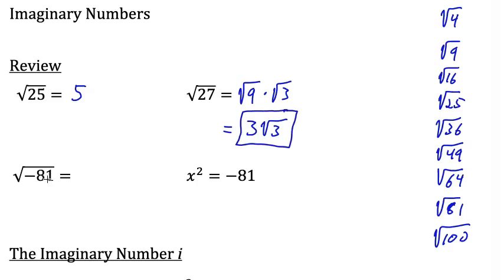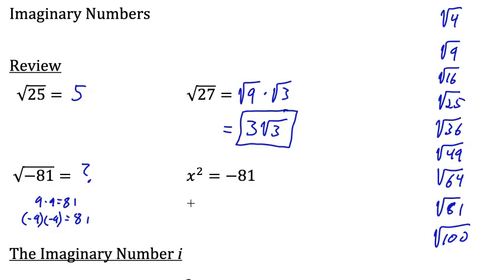Now when we take the square root of a negative number — 9 times 9 equals positive 81, so that doesn't work. Negative 9 times negative 9 equals positive 81, so that doesn't work either. So when we try to think of a number that multiplies by itself to equal negative 81, we can't figure anything out. The same idea applies to solving x² = -81 — because 9 times 9 is positive 81, and negative 9 times negative 9 equals positive 81. So you might remember your teacher telling you that there is no real solution.